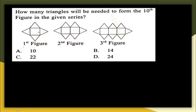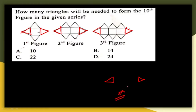Next question: how many triangles will be needed to form the 10th figure in the given series? There is a pattern: on both sides of each figure there are always two triangles. This holds for the 1st, 2nd, 3rd, and 4th figures, and will also hold for the 10th figure — so the two side triangles remain constant.